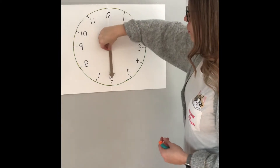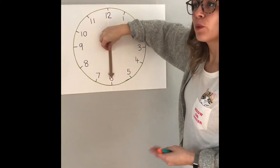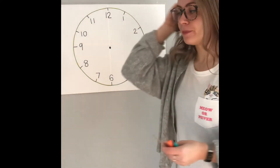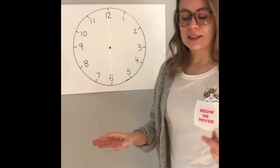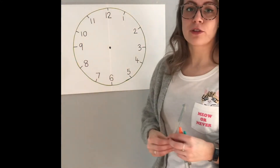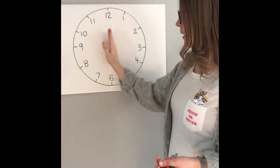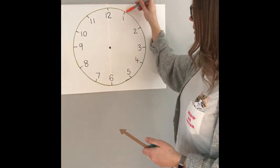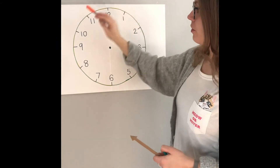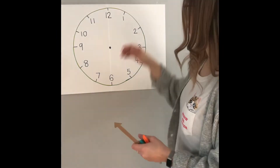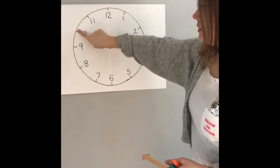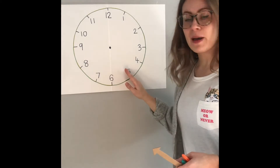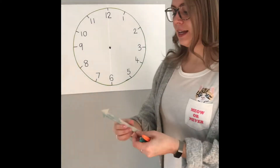But once you've gone past half past, you use the word 'to', and then it's so many minutes to the next hour. If you remember from one of my last videos, I said to you Y3: imagine that there is a mirror running straight down the middle of the clock. So if this is five past and ten past on this side, it will be five to and ten to on the other side. Quarter past becomes quarter to, twenty past becomes twenty to, twenty-five past becomes twenty-five to.